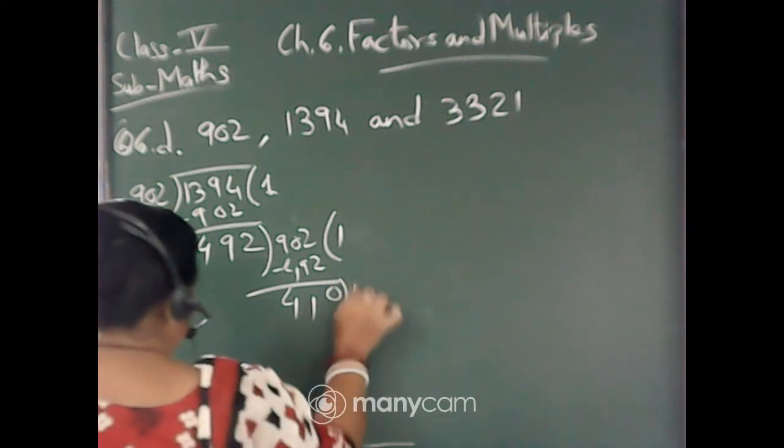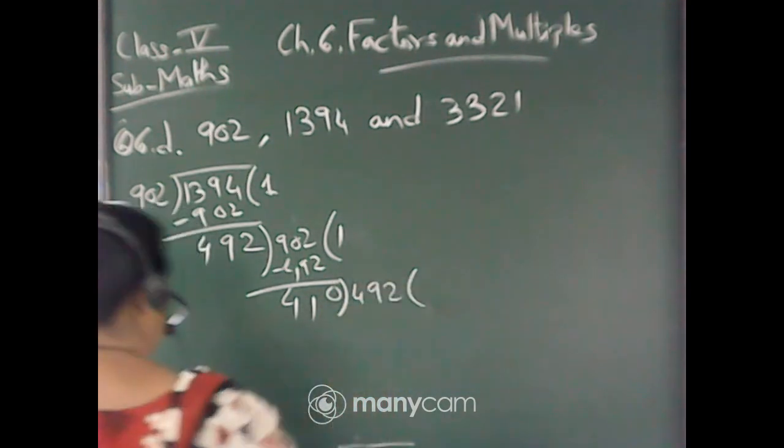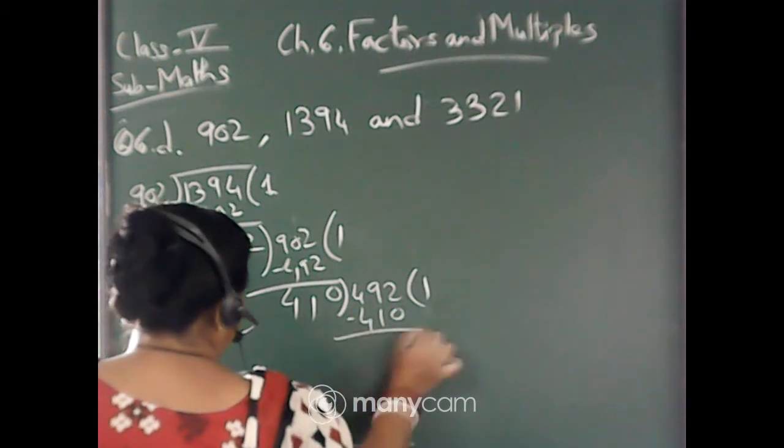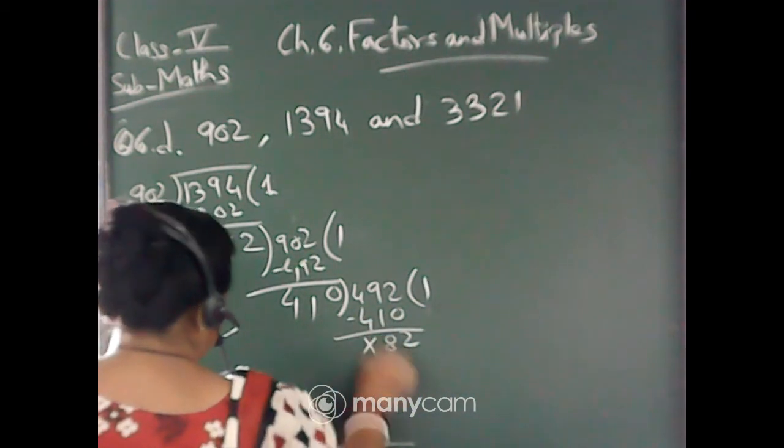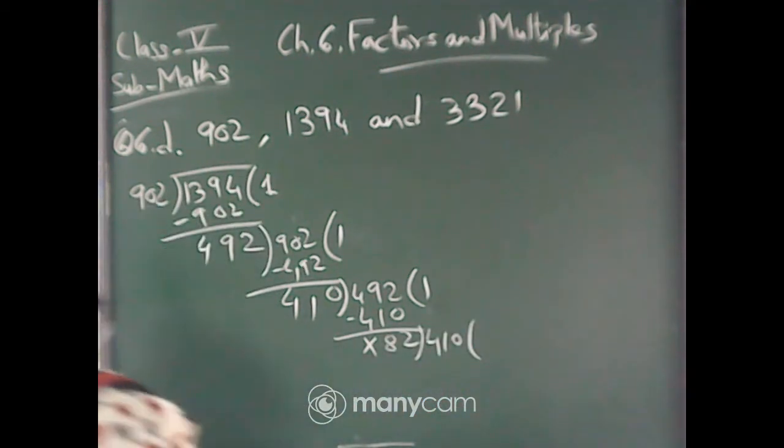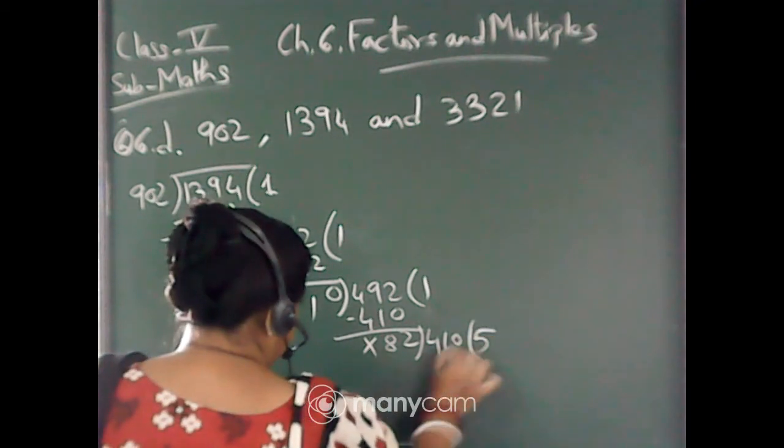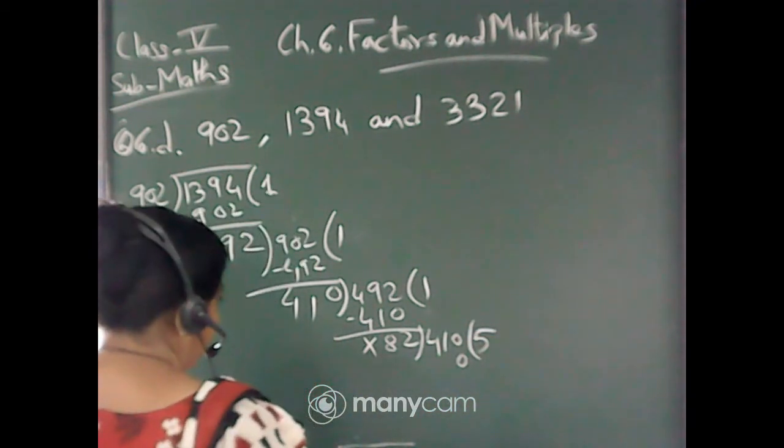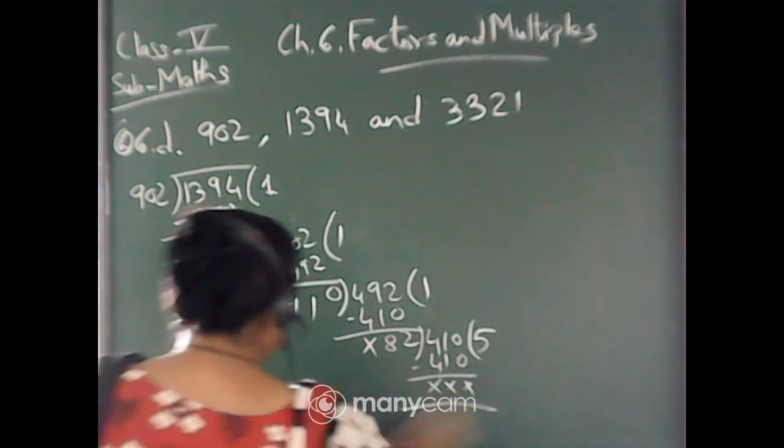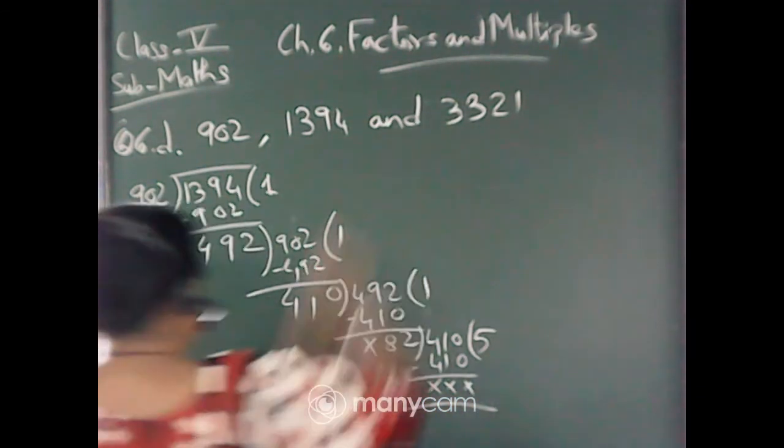Now this 492 will come down and you have to divide. 1 times 410, 2 and 8. This 410 will come down. 5 times 410, 5 times 10 carry 1, carry 1, 5 times 40. Yes, 41. That means 82. So this number you have to divide by 82.